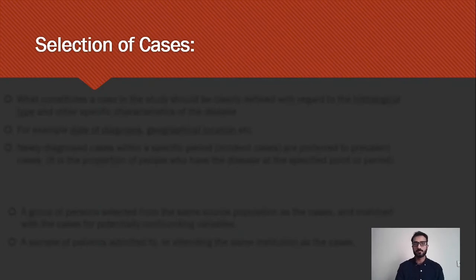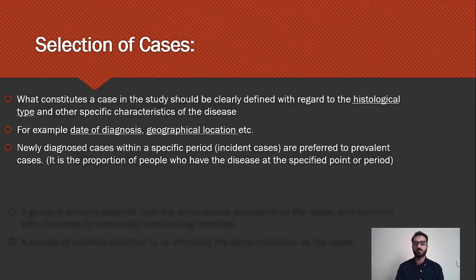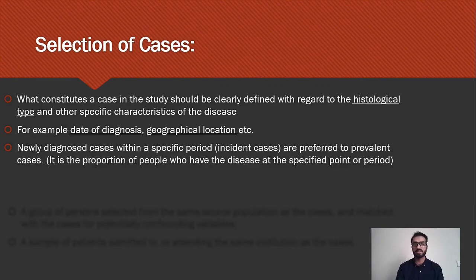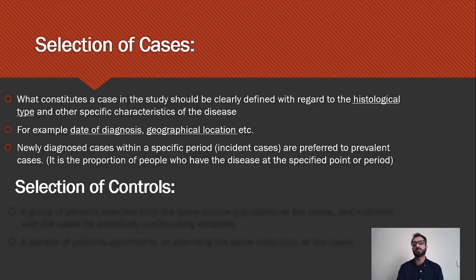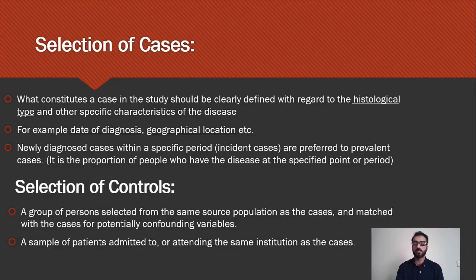Regarding the selection of cases, there is proper criteria. For cancer patients, it can be certain histological findings in their biopsy, the date of diagnosis, or cancer patients from a certain geographical location where cancer is very prevalent. Newer cases are preferred over older ones. Regarding selection of controls, we choose controls from the same population as the cases, and it is better to choose controls from the same hospital or institution as the cases.